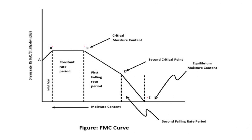As you can see from the graph, it is separated into four distinct regions representing A–B, B–C, C–D, and D–E. The first section, A–B, is the initial adjustment period. During this period, the solid absorbs heat and the temperature increases, which is why there is a sharp increase from point A to B. At this time, moisture begins to evaporate and thus tends to cool the drying solid. After some time, the temperature stabilizes, and this stabilized temperature is referred to as point B.